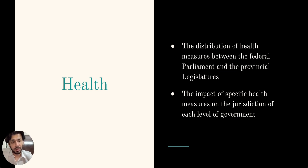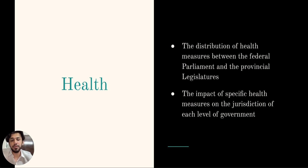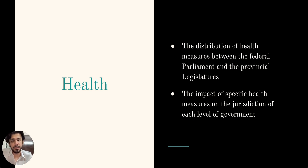In summary, criminal law in Canada is primarily a federal responsibility, with provinces having ancillary — secondary — powers to create penal provisions for the enforcement of valid provincial laws. The criminal law power encompasses a variety of areas, including food and drugs, illicit drugs, tobacco, and public health. The specific definition and interpretation of criminal law may vary depending on the context and purpose of law.